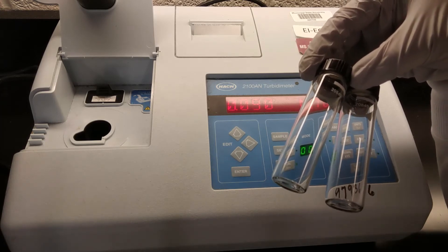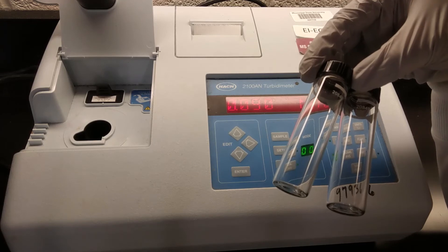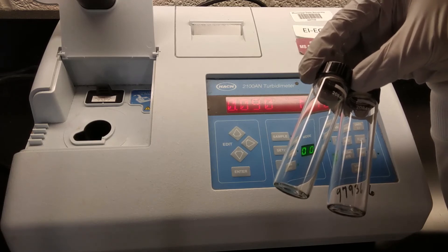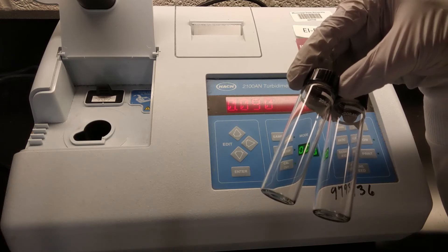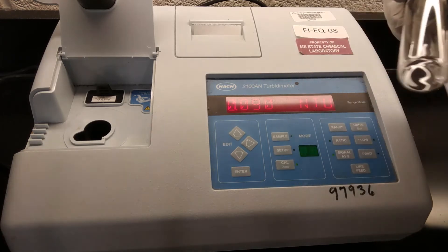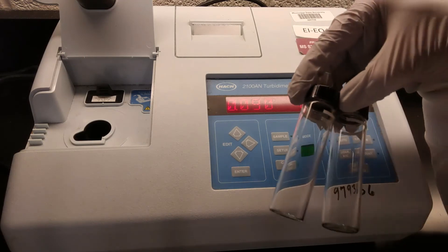And so with these two cells, we're going to have one for our blank, which is just going to be our laboratory deionized water, and then the other one is going to be our sample. I've chosen just a random old sample. I think it was maybe runoff water. So you'll be able to see with the naked eye that it is a little bit cloudier, a little bit more turbid than our deionized water. But this instrument is going to be able to quantify that.